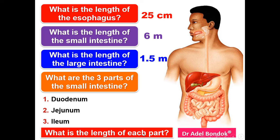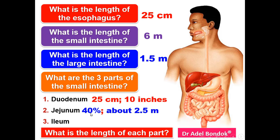What is the length of each part? The duodenum is 25 centimeters long, about 10 inches, similar to the length of the esophagus. The jejunum is 40% the length of the small intestine, about 2 and a half meters. The ileum is 60% the length of the small intestine, about 3 and a half meters.